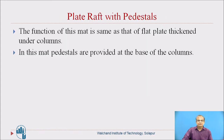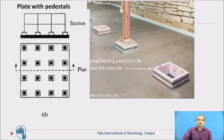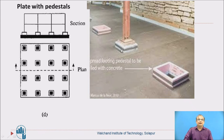Next is plate raft with pedestals. The function of this mat is similar to that of a flat plate thickened under columns, but here pedestals are provided at the base of the columns over the slab. The thickness of the column is effectively increased where it contacts the slab, so load from the column is distributed over a larger area when transferred to the slab, preventing punching shear failure and minimizing the intensity of pressure at the point of junction.